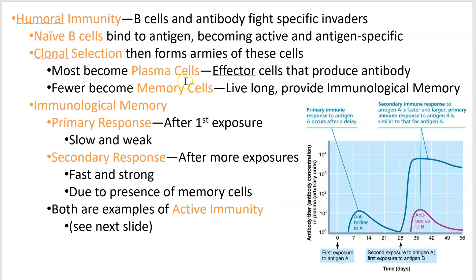That memory bestowed upon us by those memory cells gives us what we call immunological memory, which means that the first time you ever encounter something it's not going to be that good of a job. You remember the first time you tried to ride a bike, you crashed. So the first time you encounter a brand new infection, like a brand new bacterium, you're not ready for it. A few days after exposure to an antigen you start producing antibodies, but your reaction is going to be kind of weak.